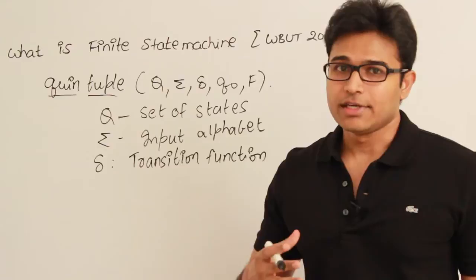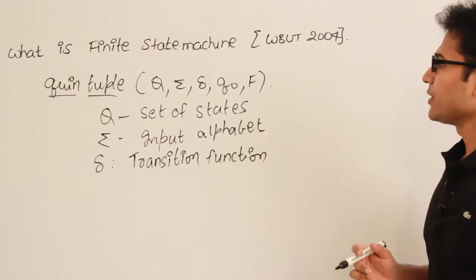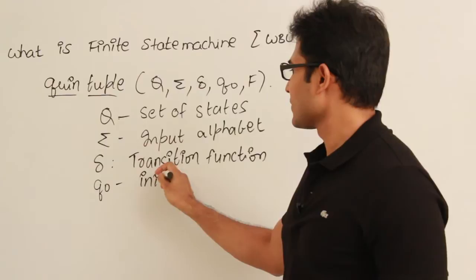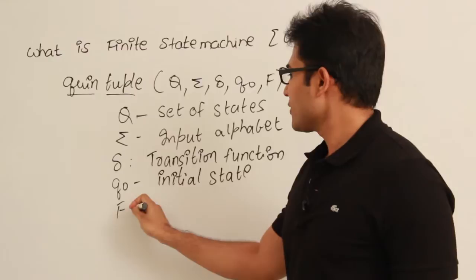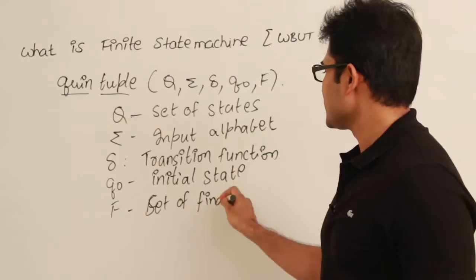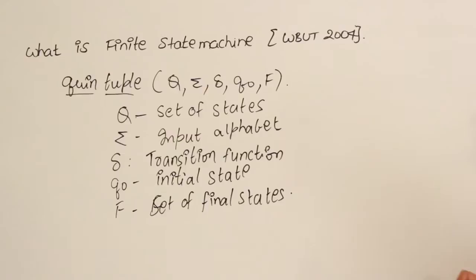You can just memorize these and write them in the exam. Q-naught is the initial state, and F is the set of final states.